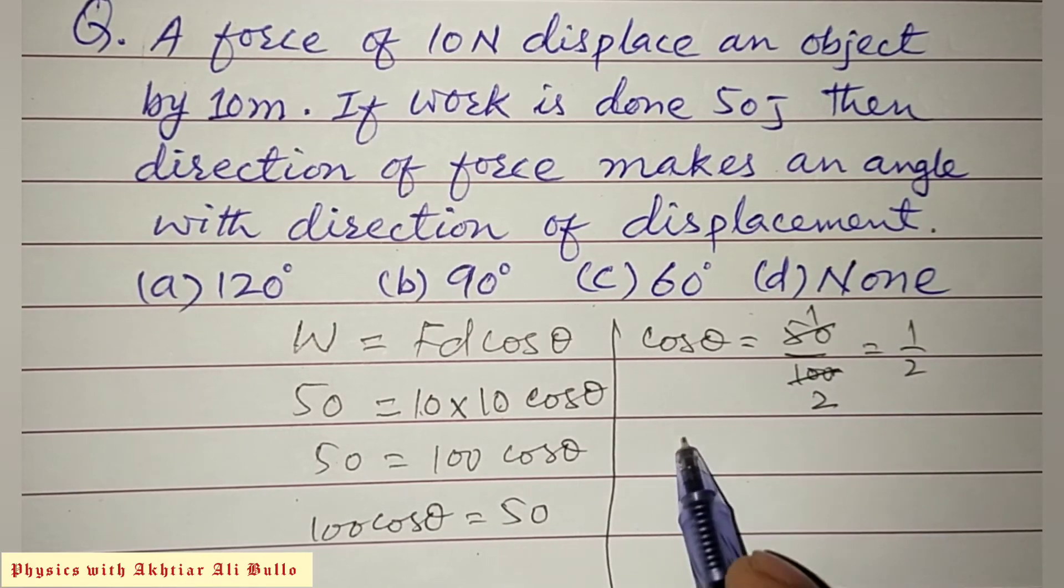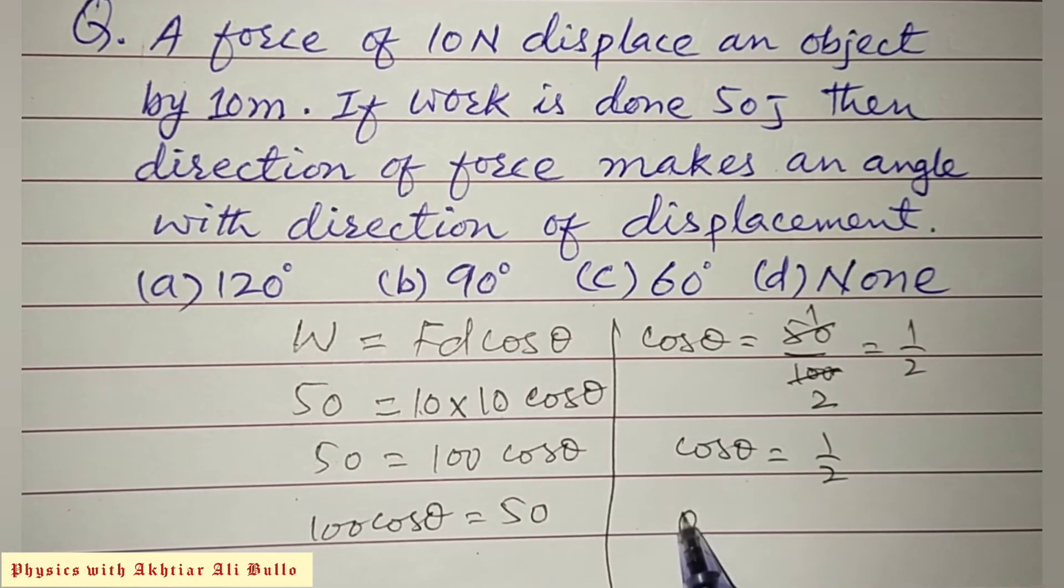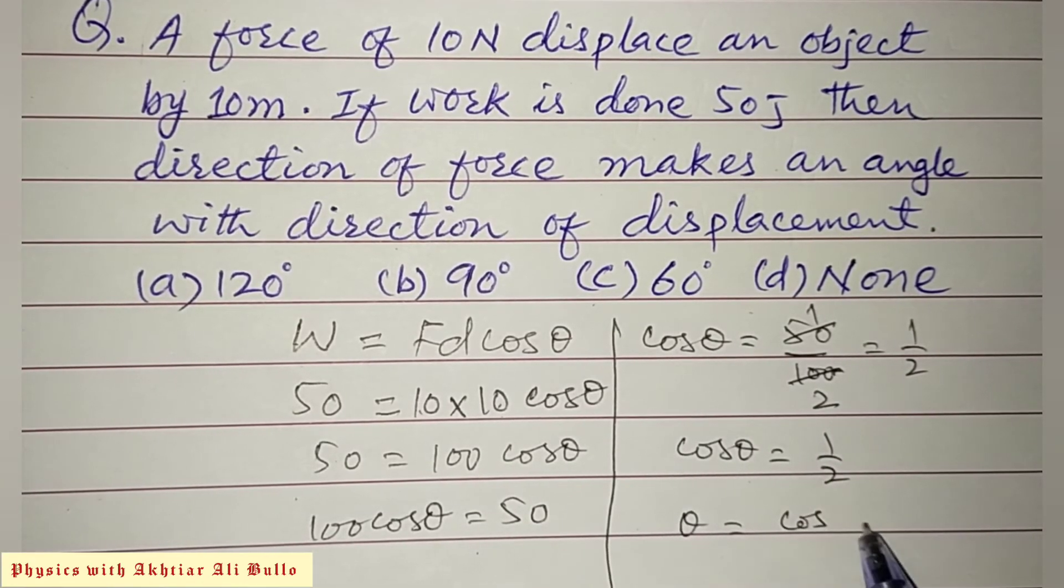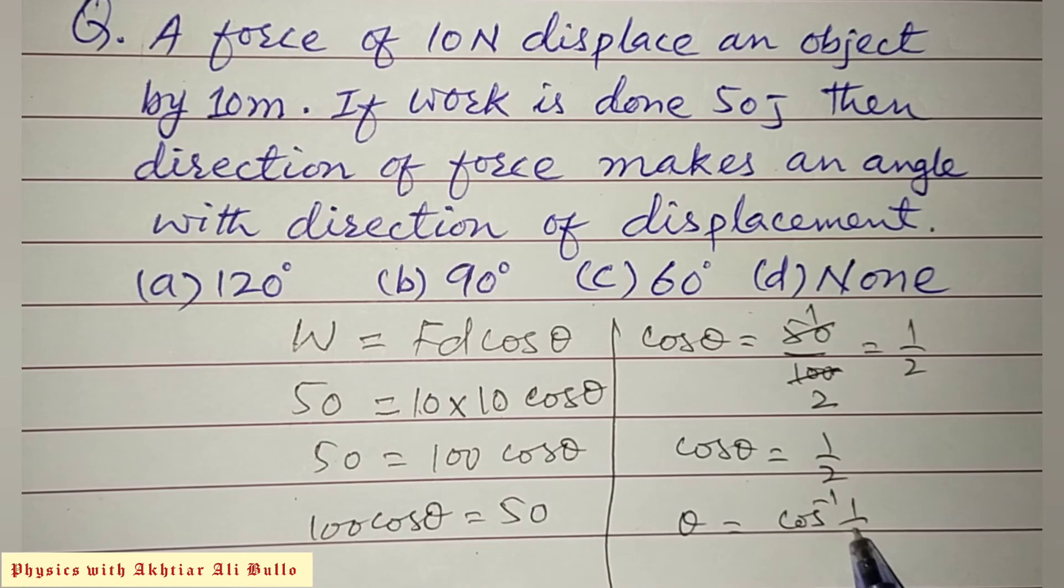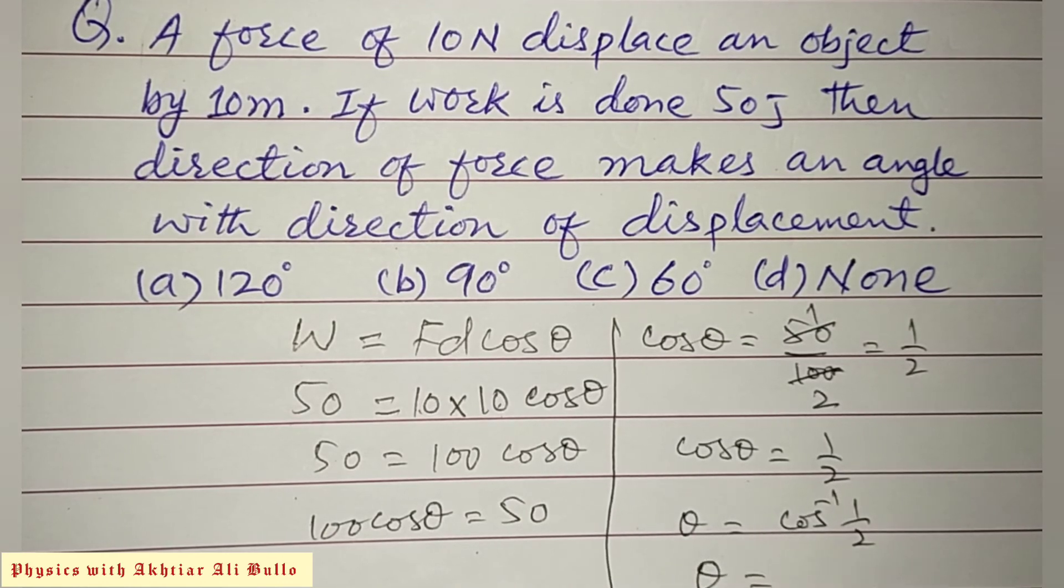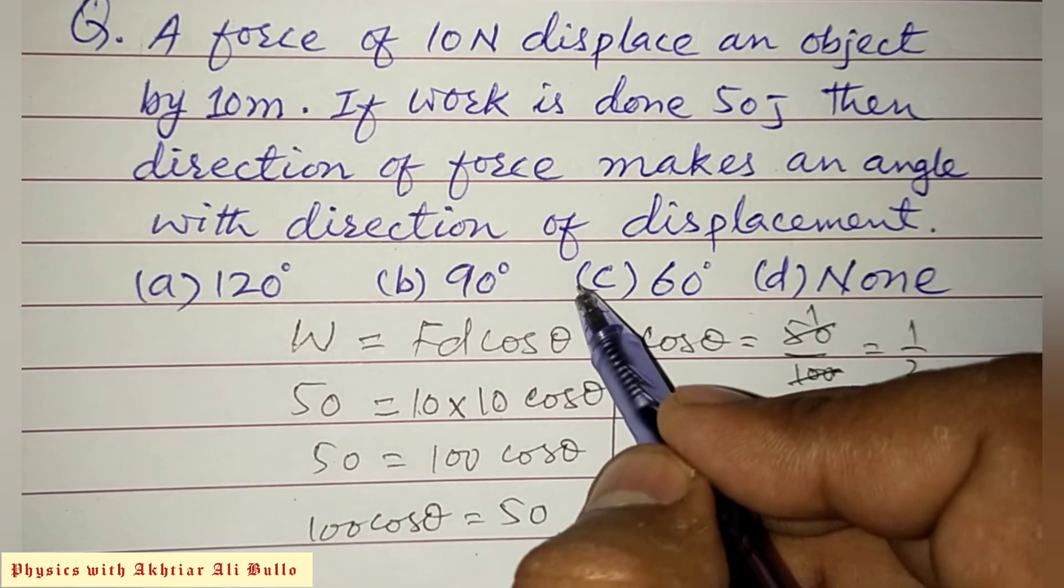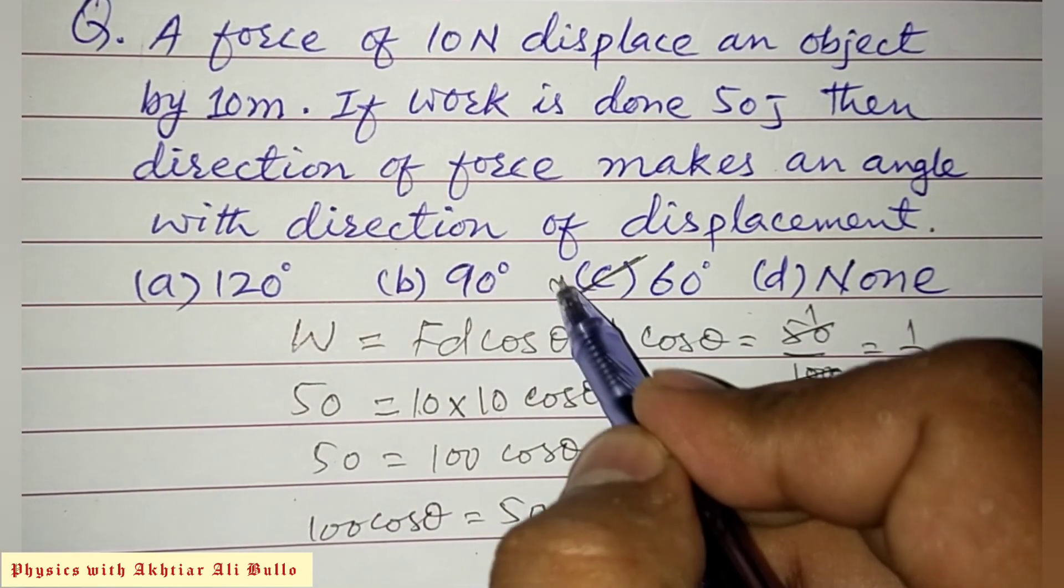So cos θ is equal to 1 upon 2. So θ will be equal to cos inverse of 1 upon 2. As we know that the value of cos inverse 1 upon 2 is 60 degrees, so the angle obtained is 60 degrees. The correct option is (c) 60 degrees.